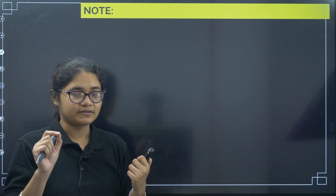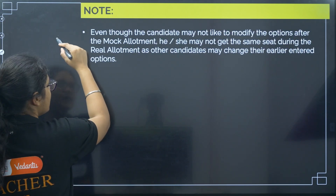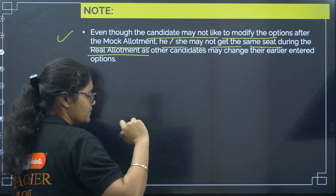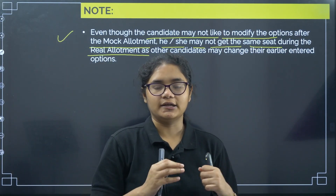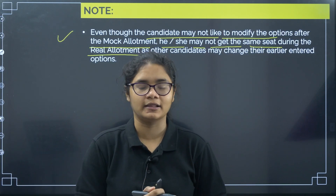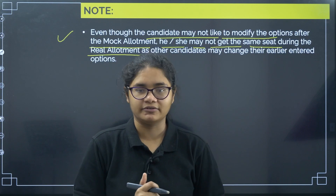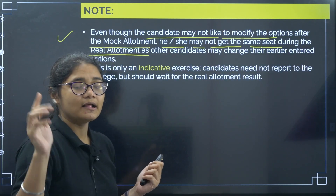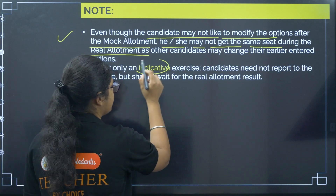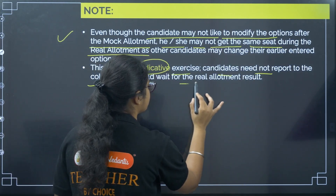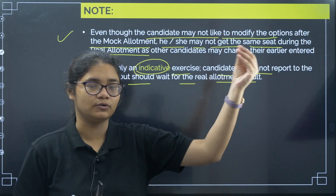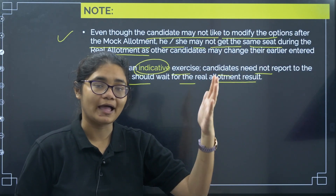Some important instructions about mock allotment: Even though the candidate may not modify the options after the mock allotment, he or she may not get the same seat during the real allotment. If you do not make any changes after the mock allotment, there is still no guarantee that you will get the same seat in the real allotment — because other students may change their preferences. So whatever seat you got in the mock allotment, you cannot claim that same seat in the round one allotment. This is only an indicative exercise. Candidates need not report to the college but should wait for the real allotment results. There is no need to join, pay fees, or go to the college — all those processes will start after the actual round one allotment.